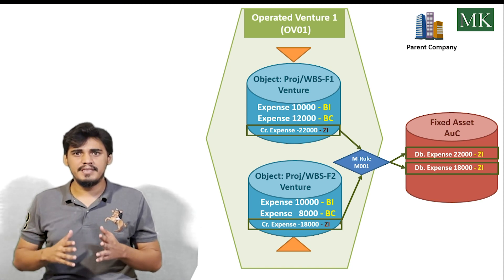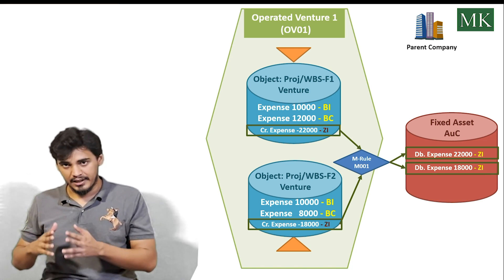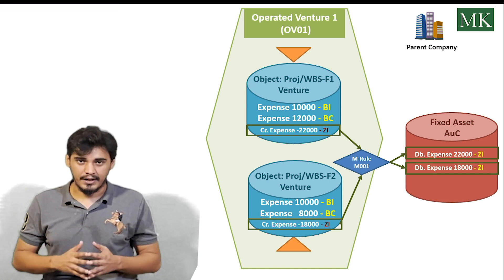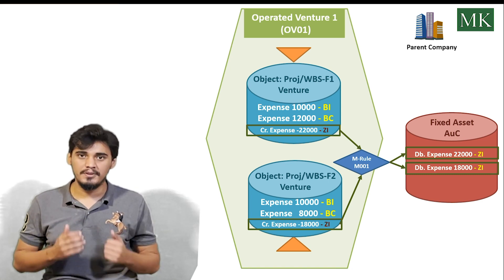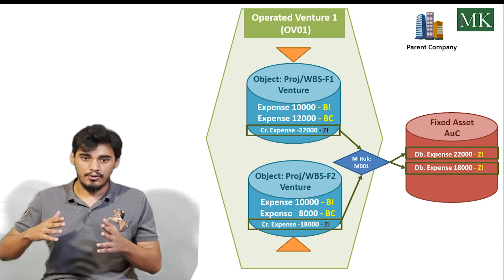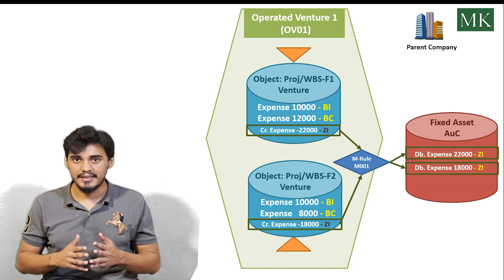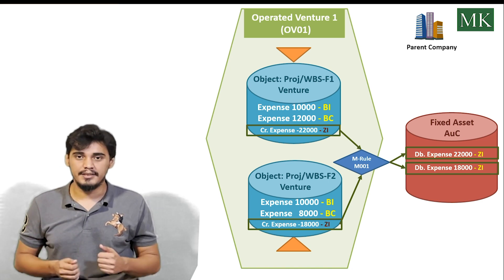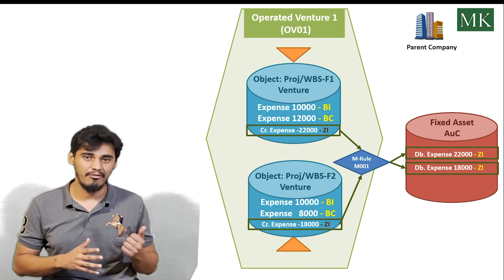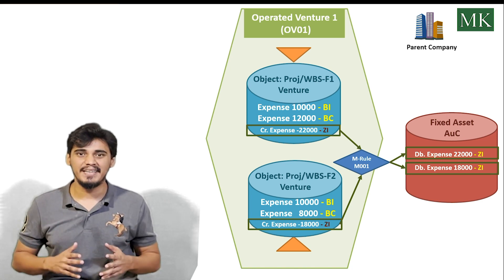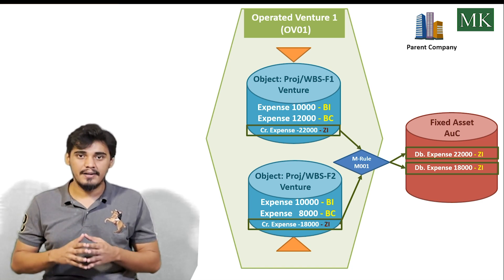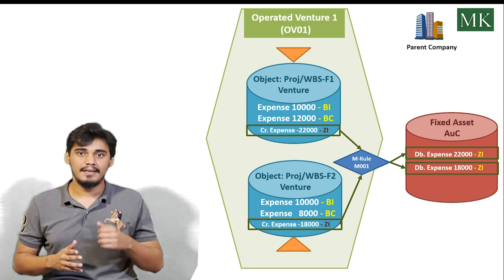This controls the recovery indicator during settlement in a way that when the settlement process is executed, the credit is booked on the WBS element with the recovery indicator ZI, which is a non-billable recovery indicator, meaning it will not be processed by the cutback transaction. As you can see in the figure, the credit of 22,000 and 18,000 is booked on WBS elements F1 and F2 with recovery indicator ZI, and with the same recovery indicator ZI the debit is posted on the receiver AUC.